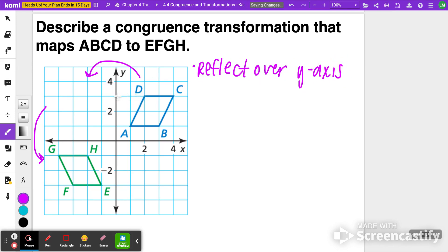So D would move 1, 2, 1, 2. Here's D prime. C is 4 points away, so 1, 2, 3, 4. A is only 1 point away, and B is 1, 2, 3 points away. So right here. So far, there's your y-axis reflection.